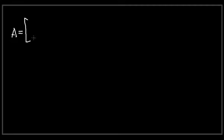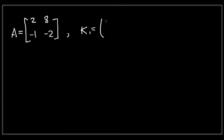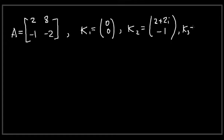The matrix we're going to be working with is the following 2x2 matrix. Its entries are in the first row 2 and 8, and in the second row minus 1 and minus 2. The vectors we're given along with the matrix are k1 equals [0, 0], k2 equals [2+2i, -1], and k3 equals [2+2i, 1].